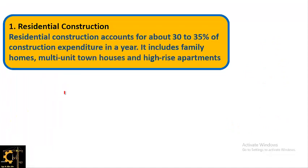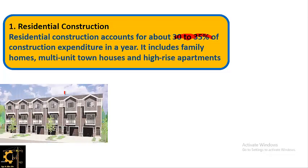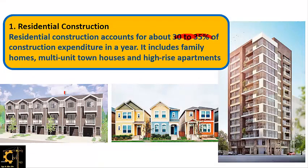The first type is residential construction, which accounts for about 30 to 35 percent of construction expenditure in a year — the largest share. It includes family houses, multi-unit townhouses, and high-rise apartments. Since every person needs a place to live, residential construction is very common and therefore accounts for 30 to 35 percent of the construction industry.